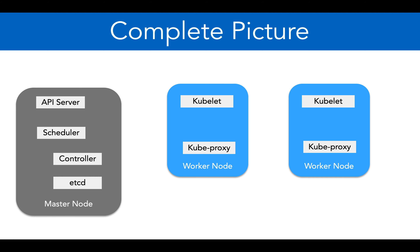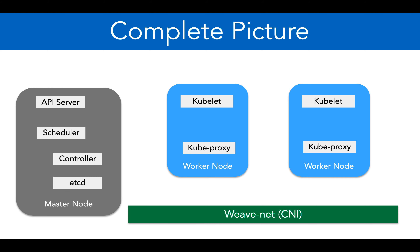So far we have not understood much about kube-proxy - why it is running there and what the use case is. But there is a very important reason for kube-proxy to be there, which we'll see in our services lecture. Now, how do things work together? First of all, we have an additional component which we have seen - our network plugin.